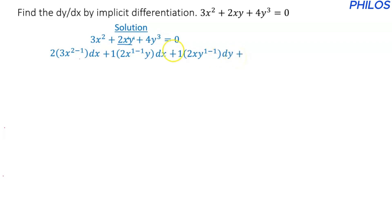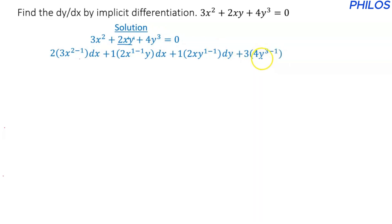Plus — now we differentiate 4y cubed with respect to y, since y is the only variable there. We multiply by the exponent, which is 3, and subtract 1 from the exponent. So we have 3 times 4y to the power of 3 minus 1, times dy, equals 0.